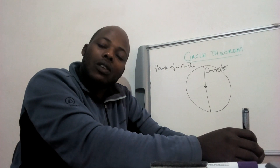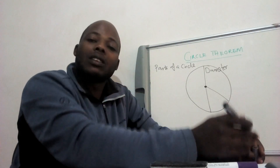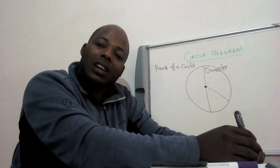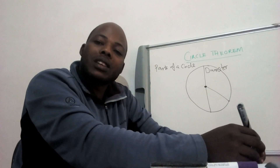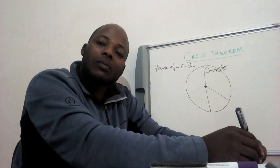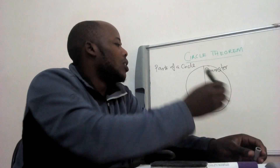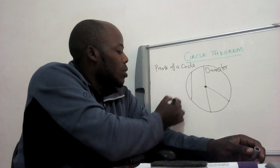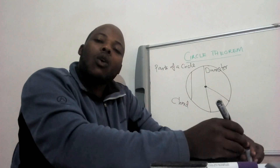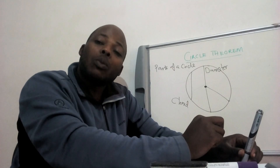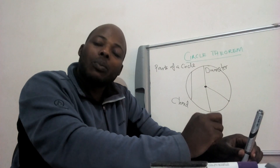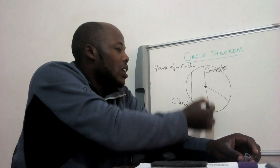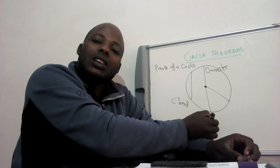A circle has got a radius. A radius is half of a diameter. A circle has also got what we call a chord. A chord is simply a line touching two parts of the circle or two parts of the circumference — in this case, it's touching this part and this part. Even the diameter can also be called a chord.